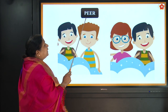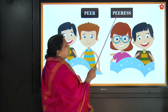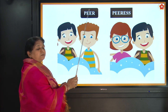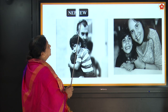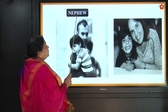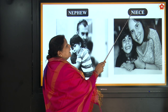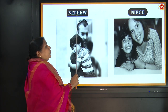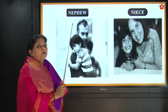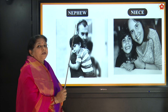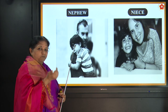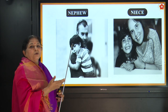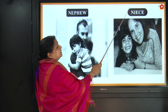Then we have peer, P-E-E-R, and peeress, P-E-E-R-E-S-S. Then we have nephew, N-E-P-H-E-W, and niece, N-I-E-C-E. When we did the family tree in earlier lessons — nephew and niece. Nephew is for a boy: your uncle's son is your nephew. Your uncle's daughter, or your sister's daughter, or your brother's daughter is your niece.